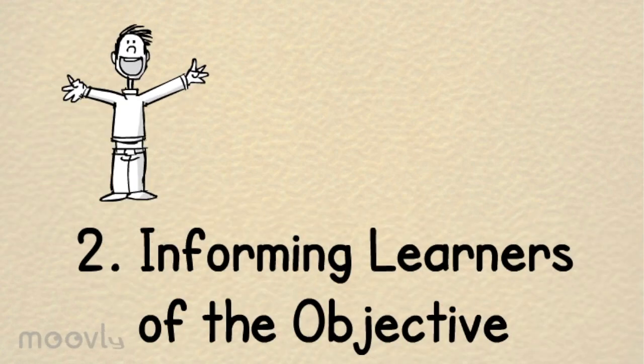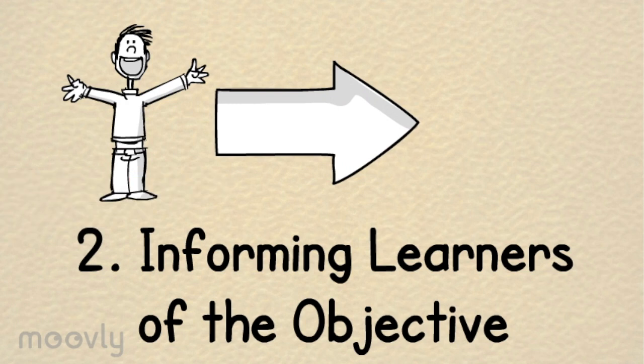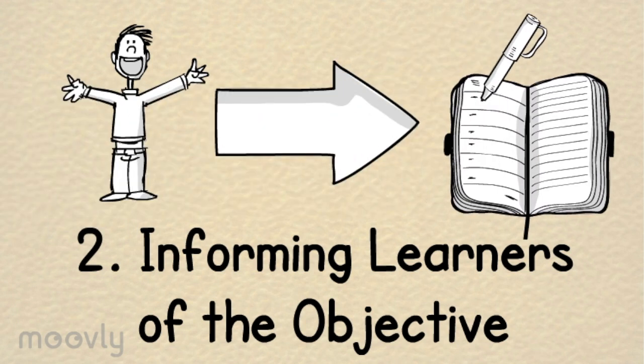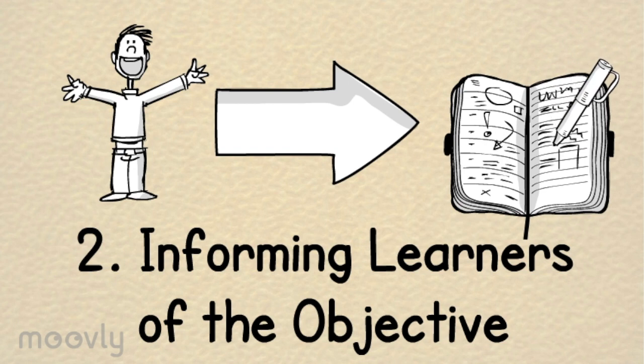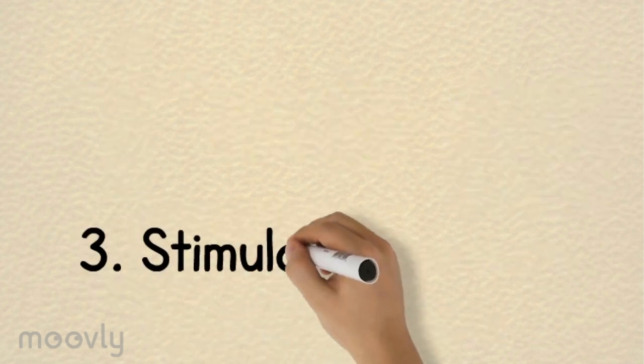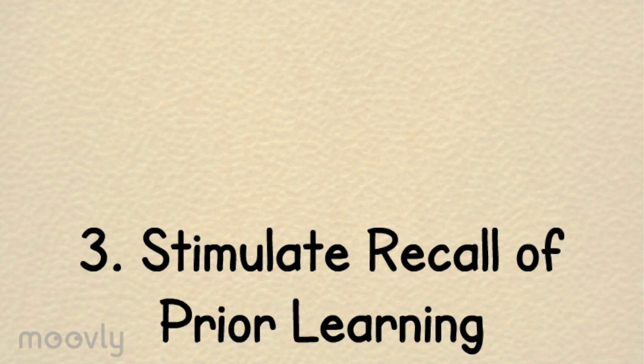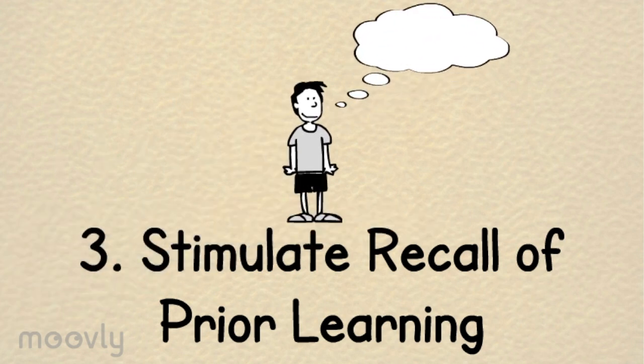Informing the learner of the objective is telling the learner what they will be able to do at the end of the instruction. An example of this is telling a class that they will be able to write narrative texts. The next step is to stimulate recall of prior knowledge. This is connecting what the learner is about to learn to what they already know.